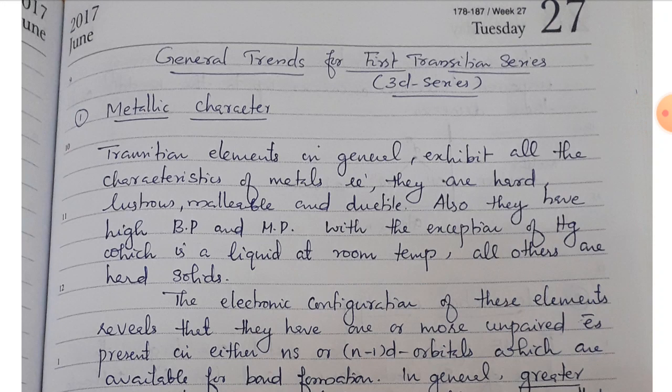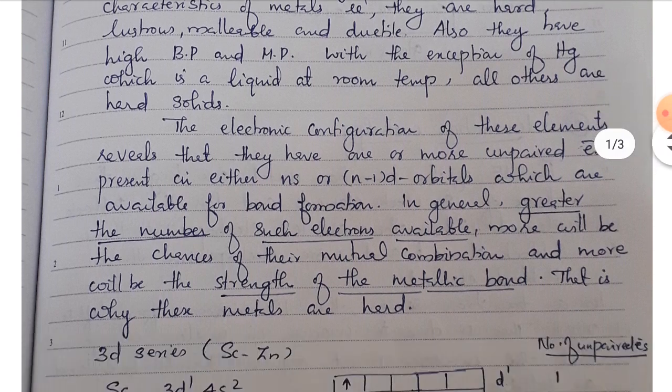All others are hard solids, so generally transition elements have metallic character. The electronic configuration of these elements reveals that they have one or more unpaired electrons present in either NS or N-1 d orbitals, which are available for bond formation.